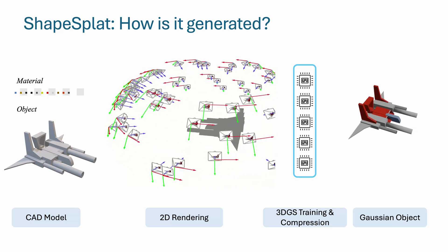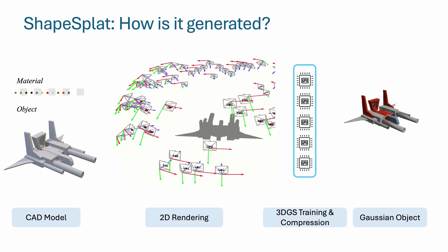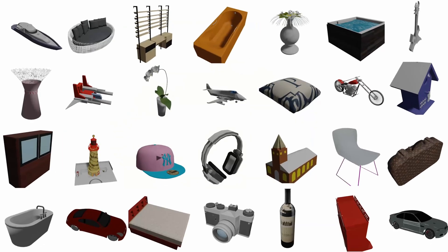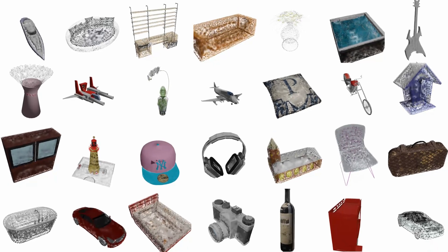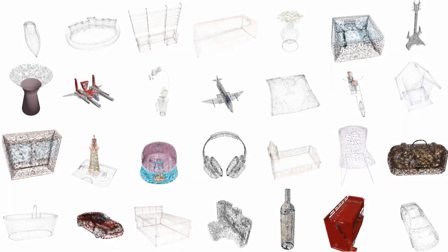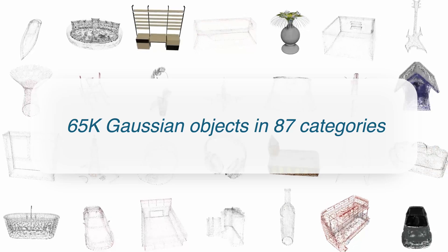we carry out standard Gaussian splatting training together with compression to reduce the redundancy. In total, we obtain 65,000 Gaussian splatted objects in 87 categories, which takes about 2 years to render on a single 12GB memory GPU.